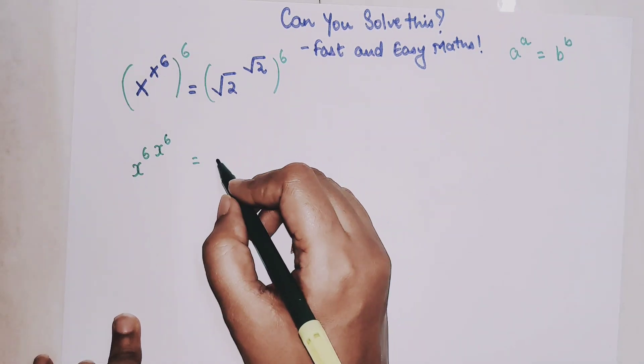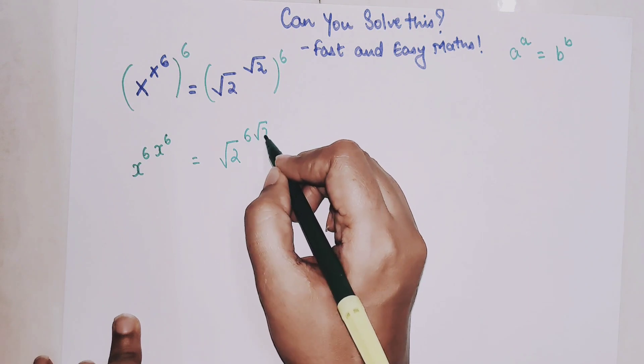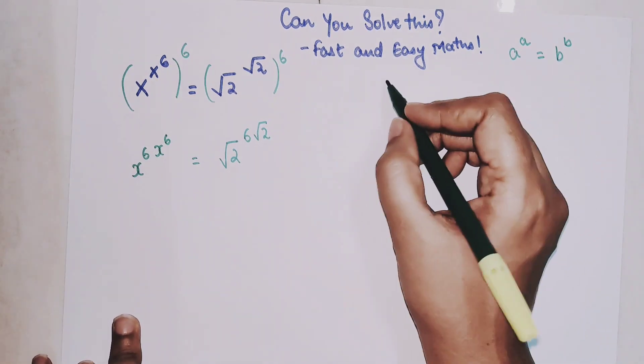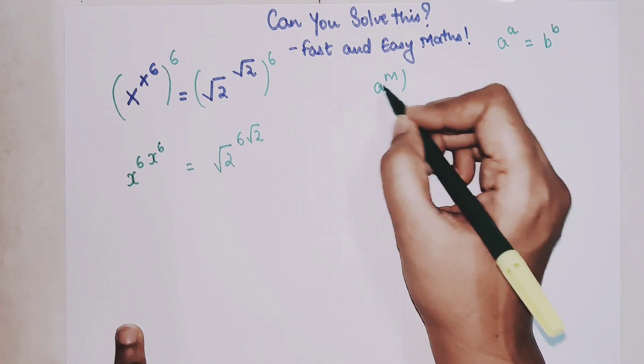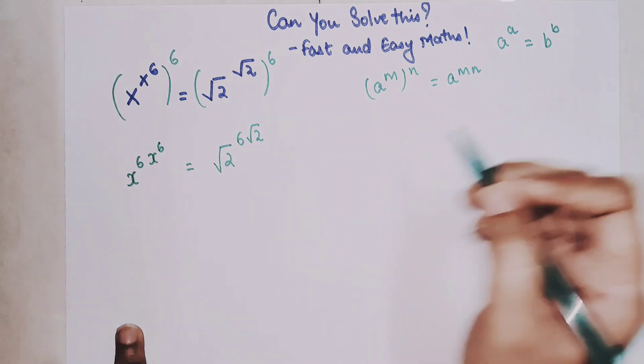So this can be written as root 2 into 6 root 2. Please understand here the rule applied over here is a raised to m the whole raised to n can be written as a raised to m into n.